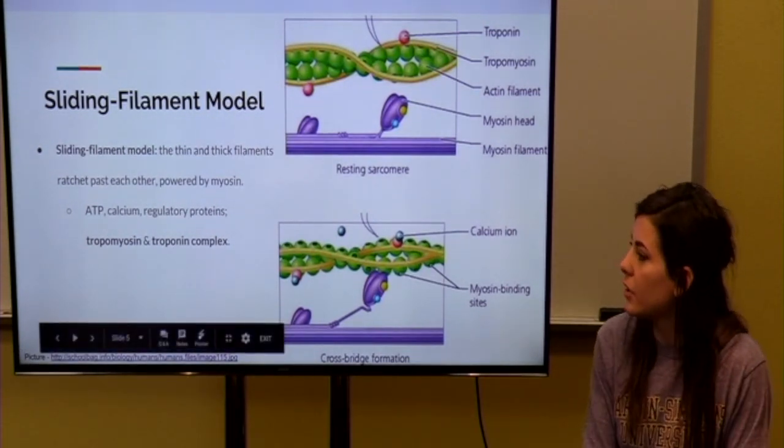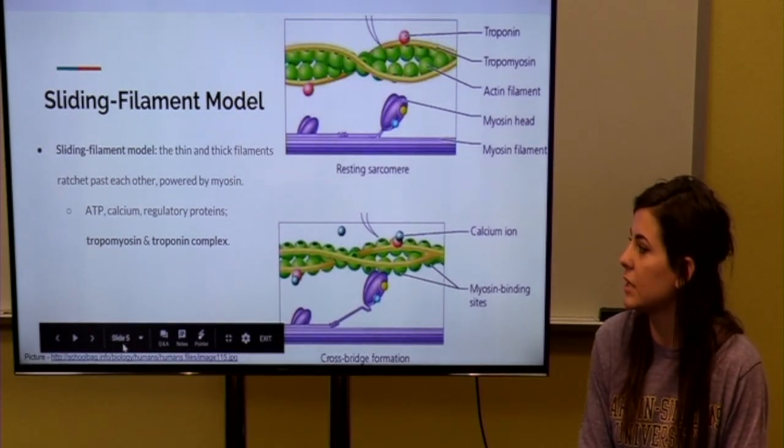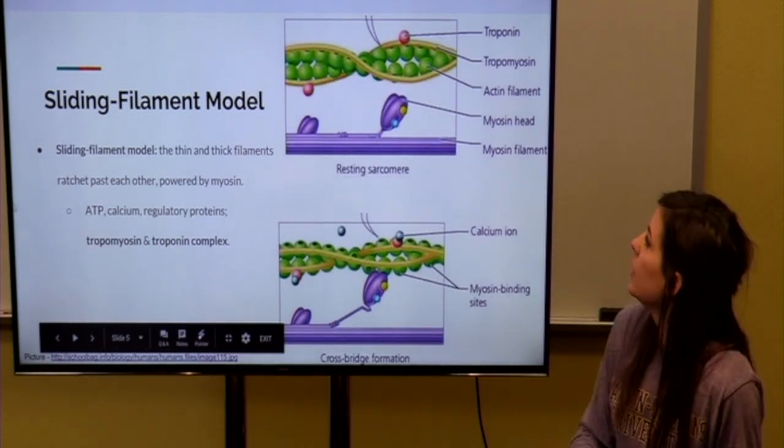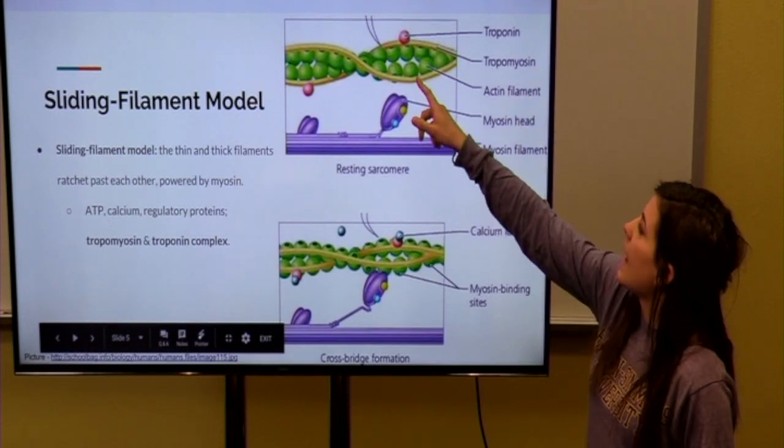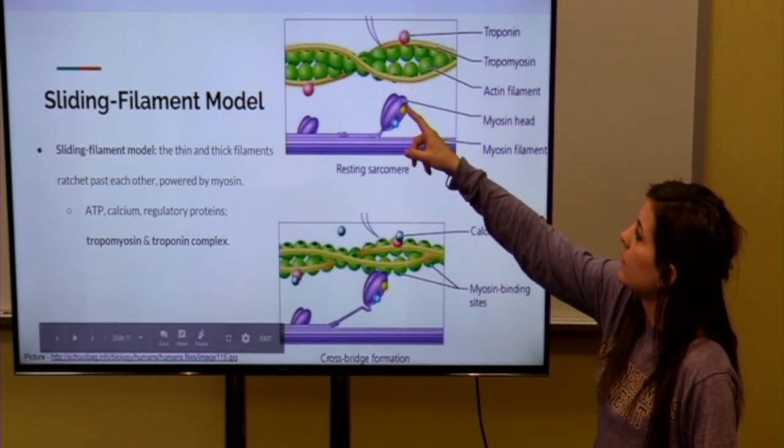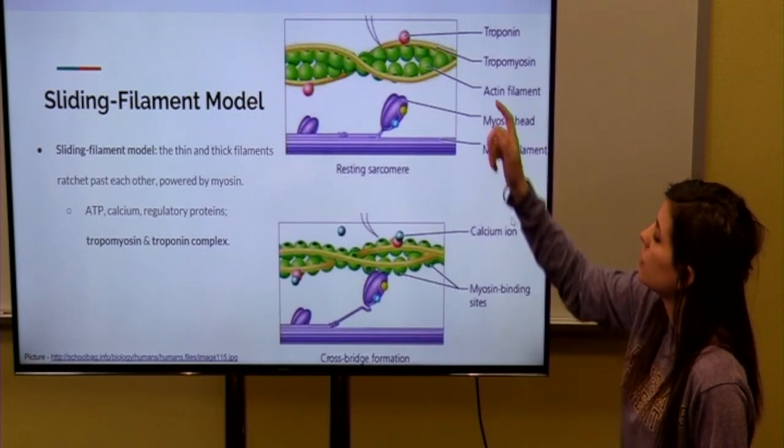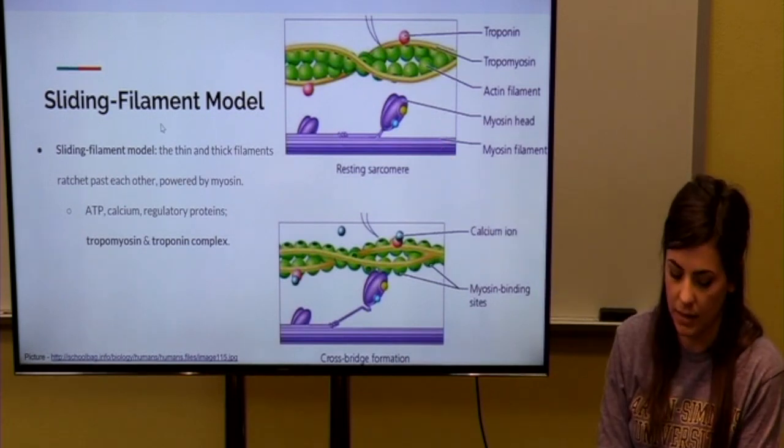And some other components that are important to this are ATP, calcium, and regulatory proteins called tropomyosin and troponin complex. You can see here, the tropomyosin covers the actin filament and the binding sites for the myosin head, and then the troponin is also connected to the tropomyosin. And down here we have the myosin filament and the myosin head.